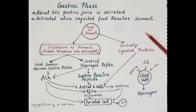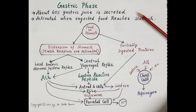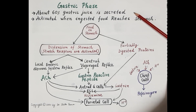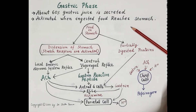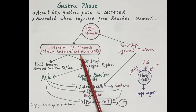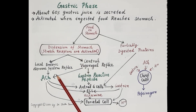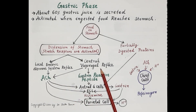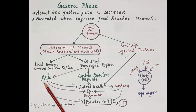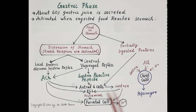Now let's discuss the second phase — the gastric phase. About 60 percent of total gastric juice is produced during this phase, initiated when ingested food reaches the stomach. Food in the stomach causes distension; the stretching of the stomach wall activates stretch receptors. This stimulates the local enteric nervous system and also stimulates the central vagal reflex, and these stimulations cause release of acetylcholine.